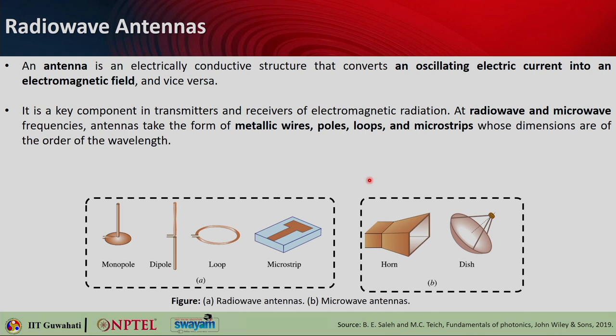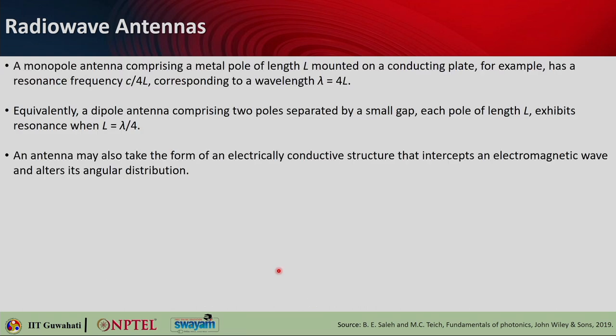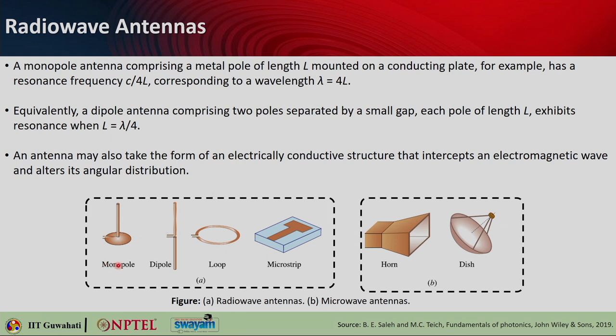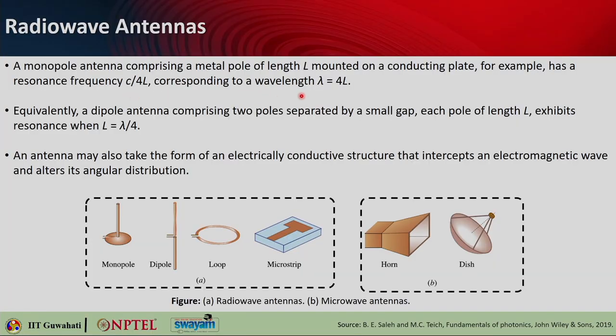Antennas are key components in transmitters and receivers of electromagnetic radiation. At radio wave and microwave frequencies, antennas can take the form of metallic wires, poles, loops, or microstrips, which are of dimensions comparable to the wavelength they are dealing with. Monopole antennas comprise a single metallic pole of length L mounted on a conducting plate, and the resonance frequency is C over 4L, corresponding to a wavelength lambda equals 4L, so the length L is lambda over 4.